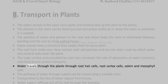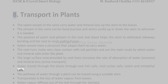Water travels through the plant through root hair cells, root cortex cells, xylem, and mesophyll cells. The pathway of water through a plant can be traced using a suitable stain.